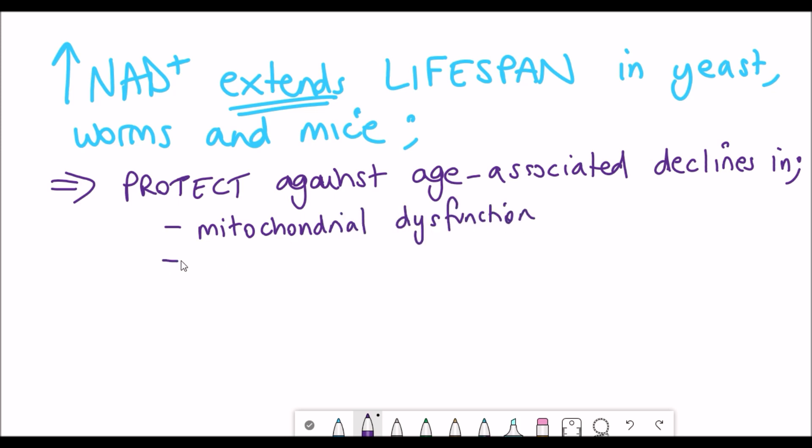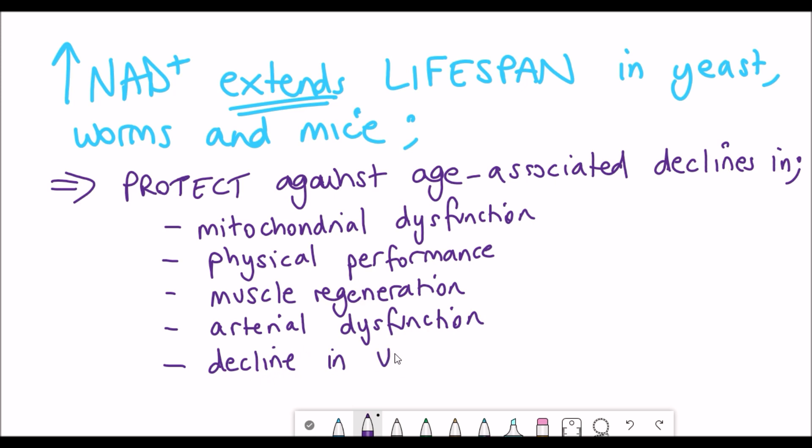Such as declines in mitochondrial dysfunction, declines in physical performance, muscle regeneration, arterial dysfunction and also prevented declines in fission and insulin resistance, so like type 2 diabetes. In addition you can see metabolic and neuroprotective benefits.